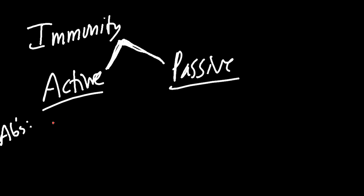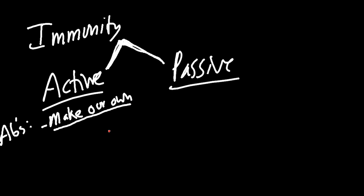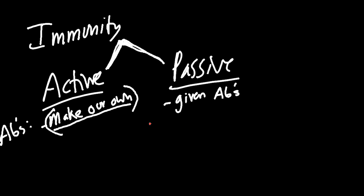For active immunity, we're going to make our own antibodies, so it's not going to be as fast. We see an antigen, our body says we need antibodies against it, and if there aren't pre-formed antibodies already in our bloodstream, we'll have to make our own. We'll have a very robust response and create memory cells. For passive immunity, we're going to be given antibodies — they're not made by our B cells, so there's no memory response formed, but we'll have them right away. So active immunity is slow; passive immunity is fast.